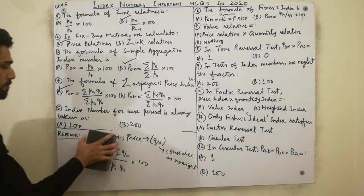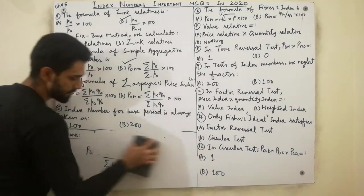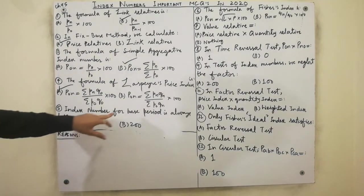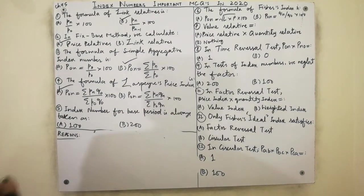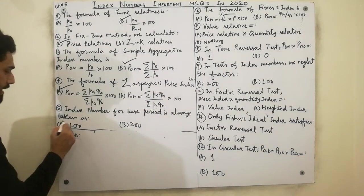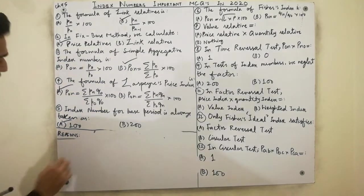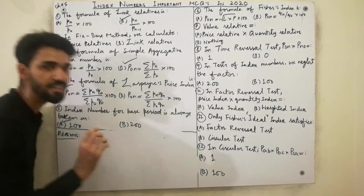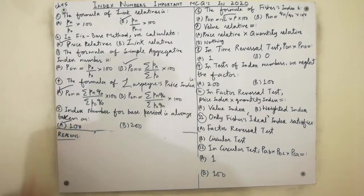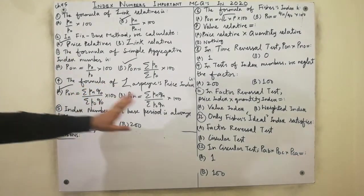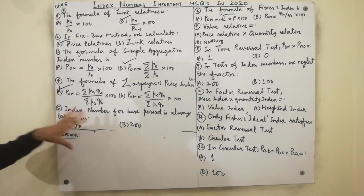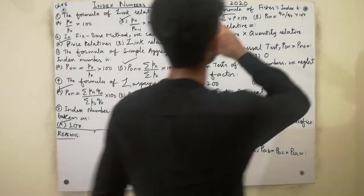Next MCQ: the index number for the base period is always taken as 100. Must remember that when we are calculating index numbers, the base period value is always taken as 100. That MCQ is very very important for you.